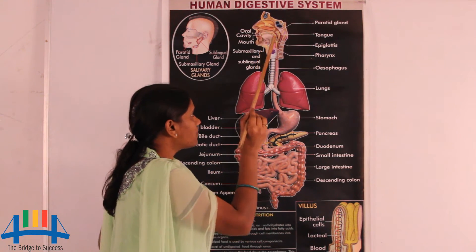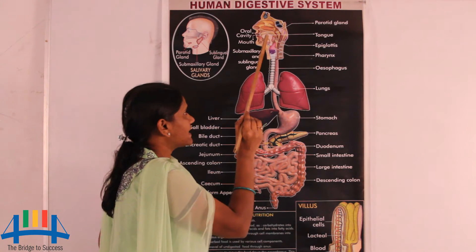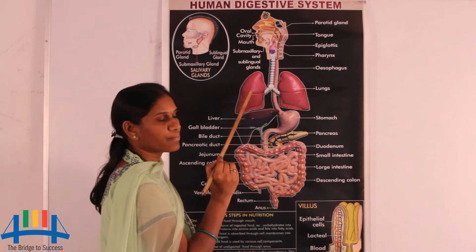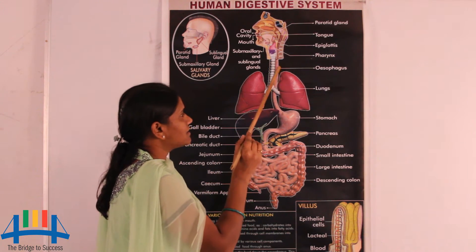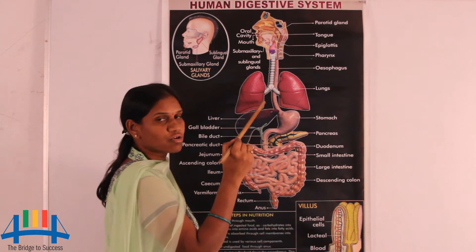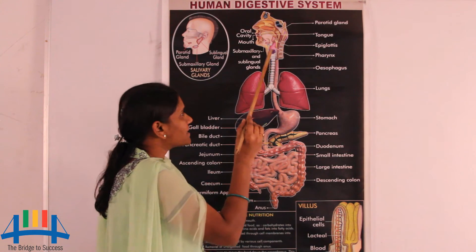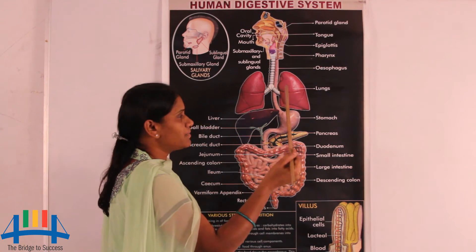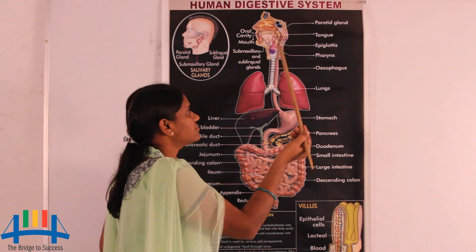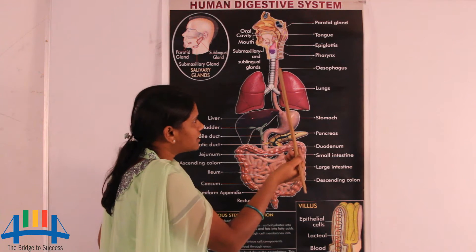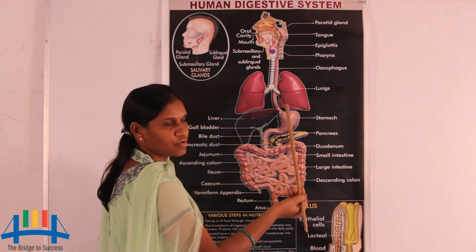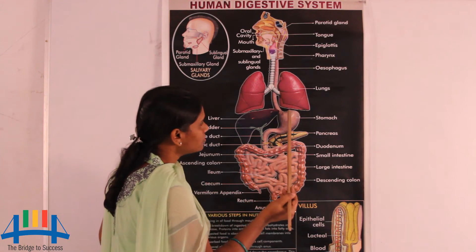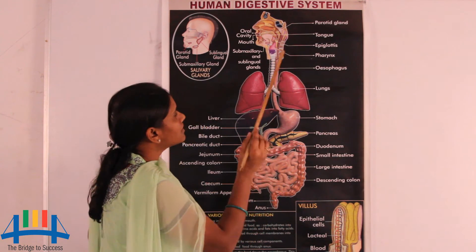The movement of food through the esophagus is called peristaltic movement. With the help of mucus, food components are automatically moved from the oral cavity to the stomach.